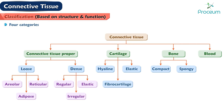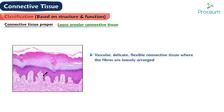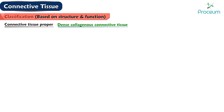Classification of connective tissue based on structure and function. Connective tissue can be broadly classified into four categories. Connective tissue proper: Loose areolar connective tissue is a vascular, delicate, flexible connective tissue where the fibers are loosely arranged. It serves as a packing material by filling spaces between various tissue components of an organ and giving it a shape — for example, subperitoneal tissue, endomysium, lamina propria.